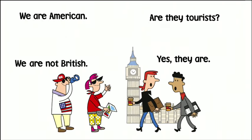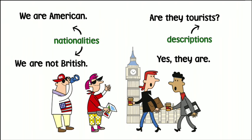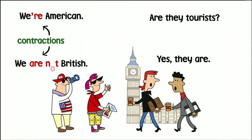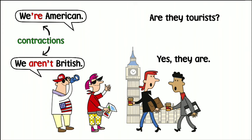We can use 'be' to talk about nationalities and descriptions. We usually use full forms in formal writing and contractions in conversation. For example: 'We're American, we aren't British.'